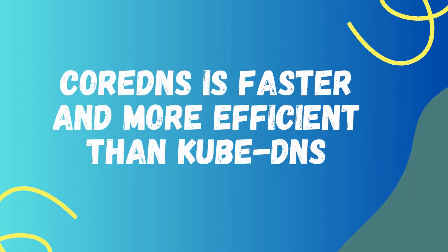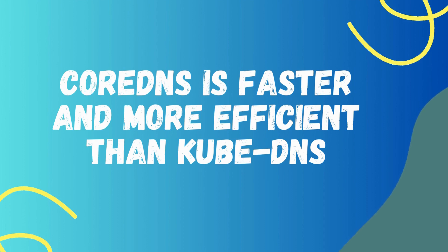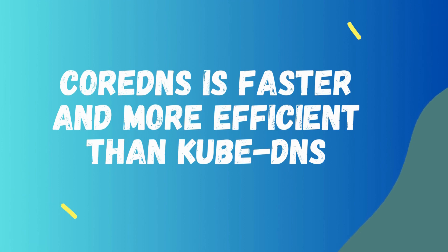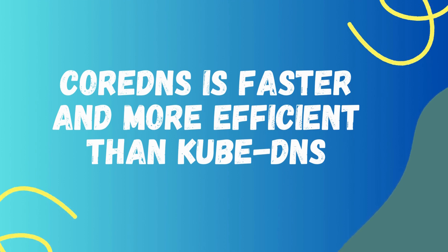Point number ten: CoreDNS is faster and more efficient than KubeDNS. This is because CoreDNS uses a single container instance, its own built-in caching, and enables negative caching by default. Overall, CoreDNS is a more modern and performant DNS solution than KubeDNS and is the recommended DNS server for new Kubernetes clusters. It is widely used in production environments.